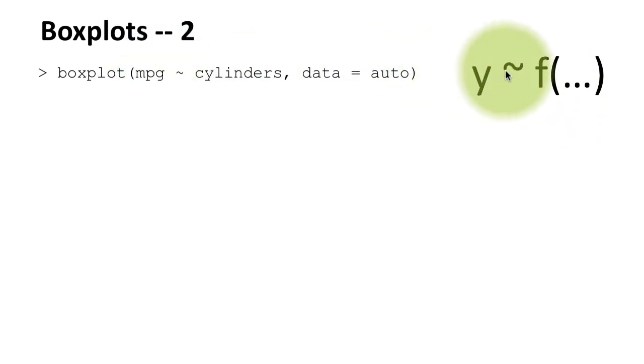So whenever you see the tilde, most of the time, on the left-hand side will be your dependent variable, right-hand side will be your independent variables. So when you do this, what you're telling the system literally is, take the data, divide the data by number of cylinders. In other words, create a subset of the data for three cylinders, another subset for four cylinders, another subset for five cylinders, and so on. And for each of these subsets, plot a separate boxplot.